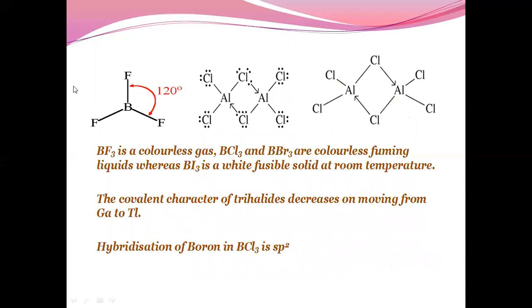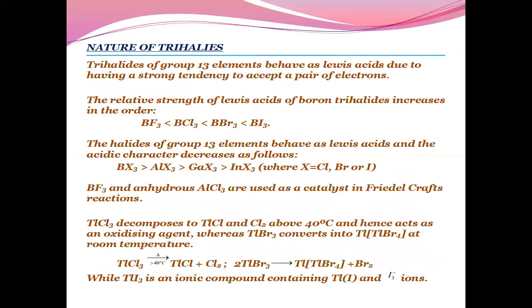You can see boron is existing as a monomer whereas aluminium is existing as a dimer. BF3 is colorless gas, BCl3 and BBr3 are colorless fuming liquids, whereas BI3 is a white fusible solid at room temperature. The covalent character of trihalides decreases on moving from gallium to thallium. Hybridization of boron in boron trichloride is SP2.